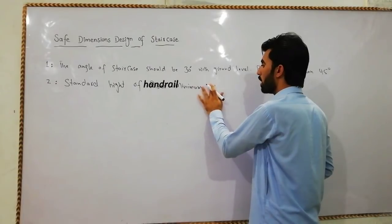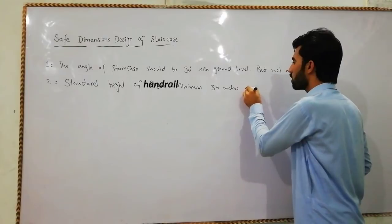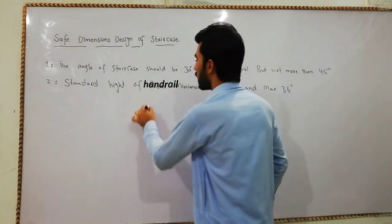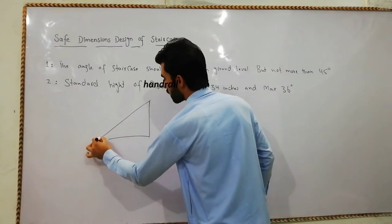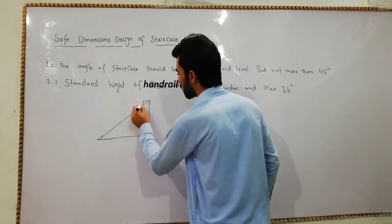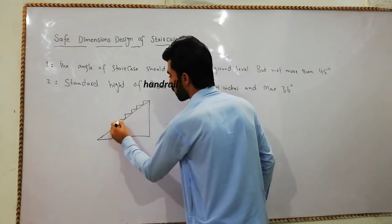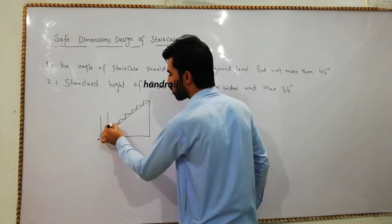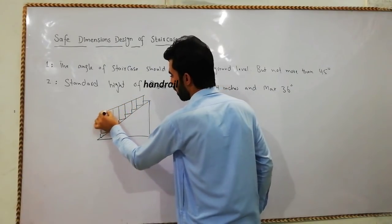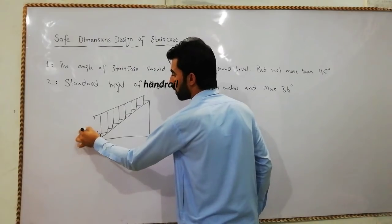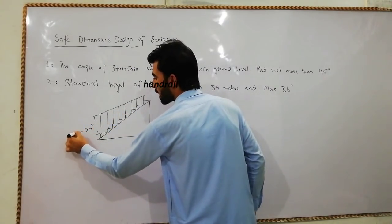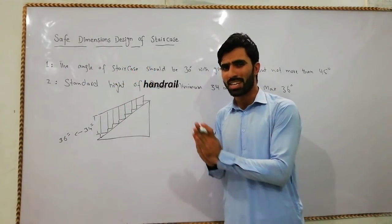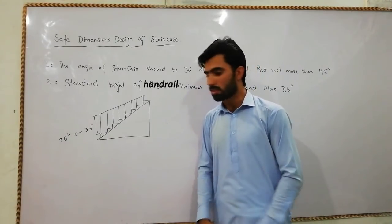The second standard dimension is the handrail height. The minimum handrail height should be 34 inches and the maximum should be 36 inches. The handrail is the support rail on the side of the staircase. Keep this in mind because this is an important safe dimension for structures, and many students and civil engineers are not aware of it.